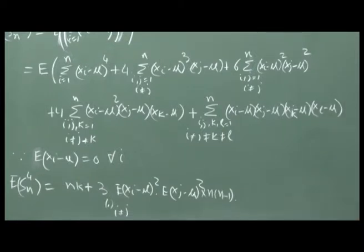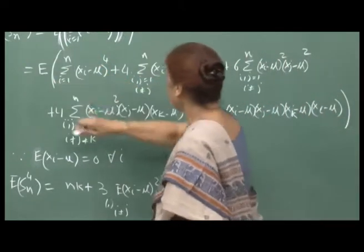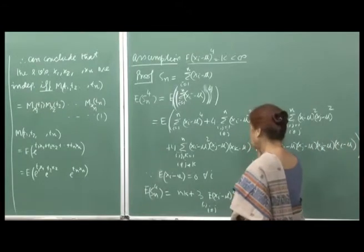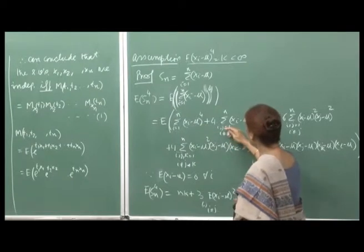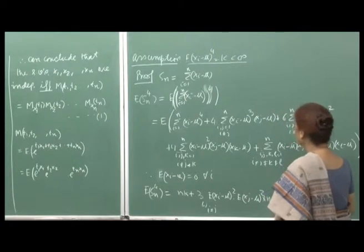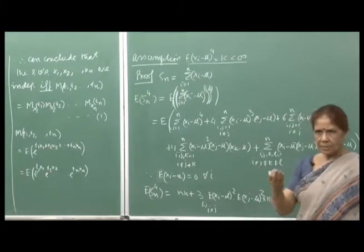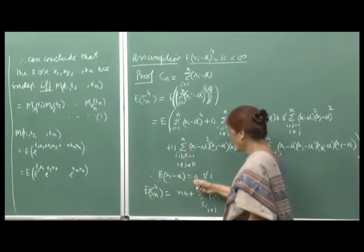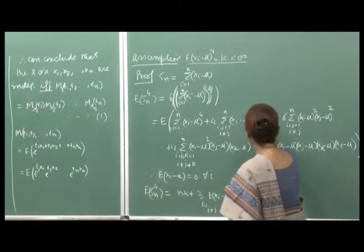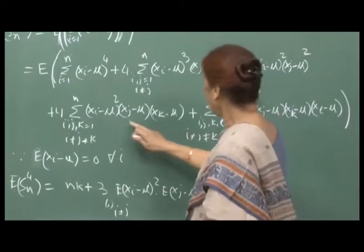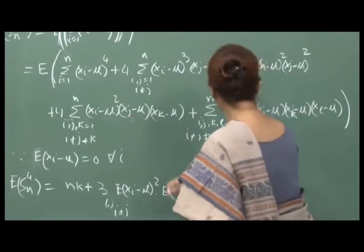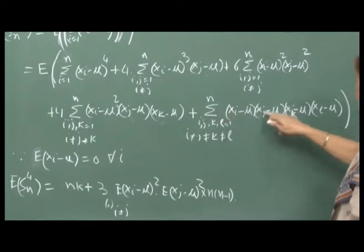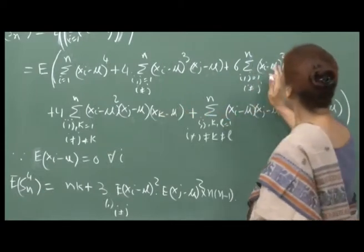This is the expansion of E[S_n^4]. Since expectation is linear and can go inside, and since the x_i are independent, the expectation of a product equals the product of expectations. Since E[x_i - mu] = 0 for all i, the terms with linear factors vanish. So we are only left with sum_{i=1}^{n} E[(x_i - mu)^4] and 6 times sum_{i≠j} E[(x_i - mu)^2] E[(x_j - mu)^2].